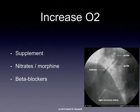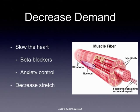Beta blockers slow down the heart, so they're helpful in decreasing the workload of the heart and increasing the amount of oxygen supply. Remember, the longer the diastolic time we have, the greater the amount of oxygen that gets to the heart. By slowing the heart, we not only increase the supply of oxygen getting to the heart, but we also decrease the demand for oxygen by the heart.